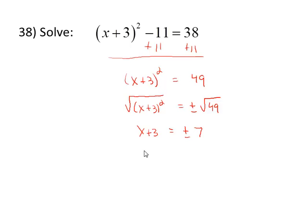Simplifying the square roots, I have x + 3 = ±7. I want to subtract the 3 to isolate x. So that's -3 ± 7. Now I'll find my two solutions: -3 + 7 = 4, -3 - 7 = -10. So my solution set is {-10, 4}.